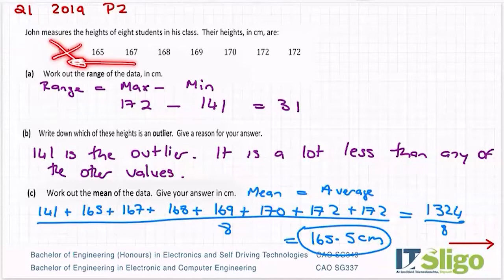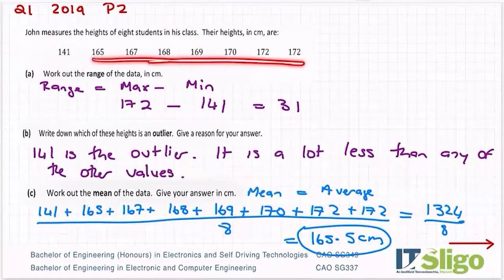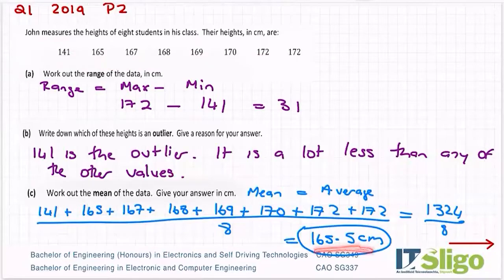If that wasn't there, what you would find is that your average height would probably be something around 168, which is more representative of the majority of heights in your classroom. But the 141 is pulling your mean down.